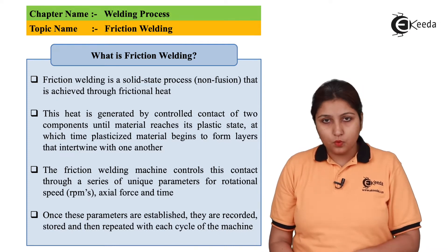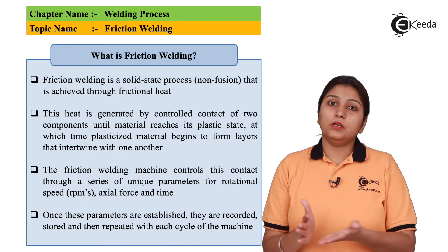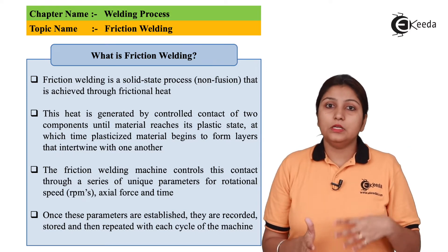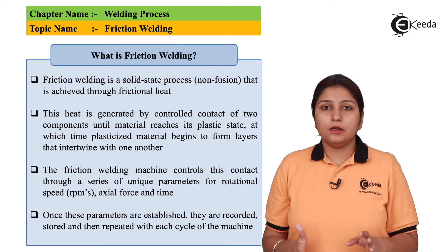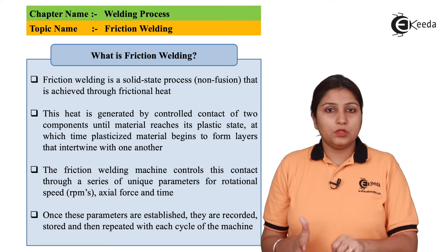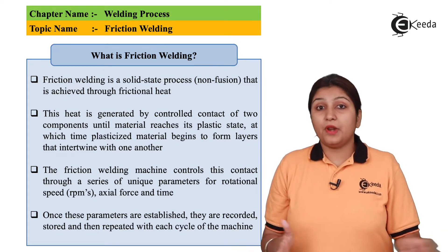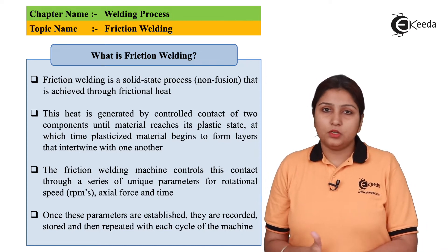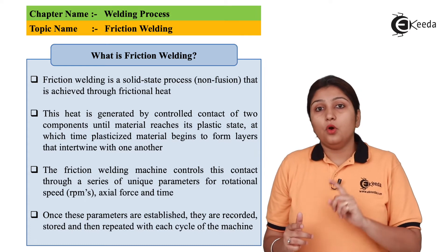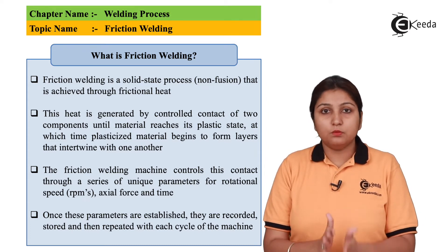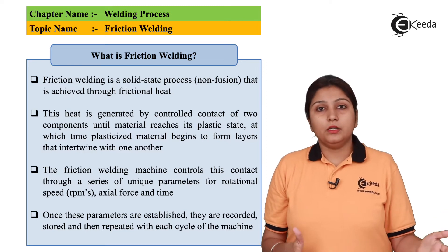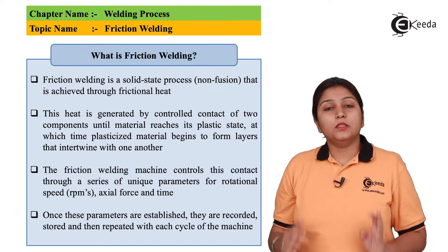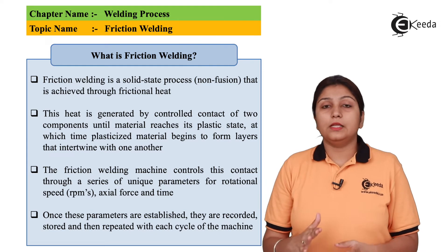If you want to weld two objects in a horizontal position, one object would be stationary and the second would be rotating. The rotating object is in touch with the stationary object and is applying some pressure along with the rotation. Because of the rotation, heat is generated as well as pressure. When heat is generated, the touching surfaces melt and with the pressure they get joined together, and this cycle is repeated until the exact welding process is done.